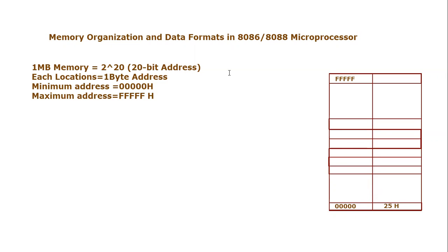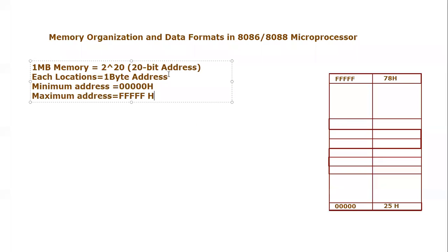The maximum address, since it is 20 bits with all bits high, becomes five Fs — so the maximum address of this memory is FFFFF hex. Let's say the value at that location is 78 hex — that's just dummy data for the purpose of explanation. So one can see the whole memory is divided into bytes; every location holds one byte of information. Since there are one million locations, the total capacity is one megabyte.